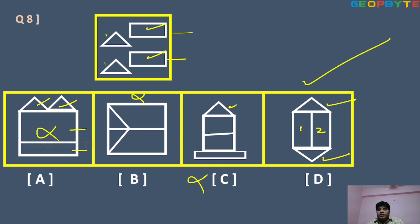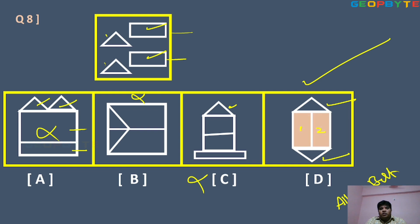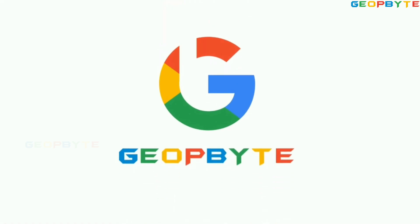All the best, children. Thank you. Option D has two rectangle boxes and two triangle boxes, so option D is the right answer. Bye-bye.